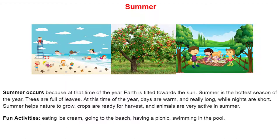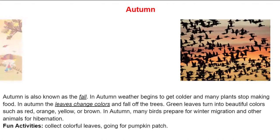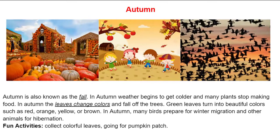Autumn is also known as the fall. In fall, weather begins to get colder and many plants stop making food. The leaves change colors and fall off the trees — green leaves turn into beautiful colors such as red, orange, yellow, or brown. Many birds migrate and other animals prepare for hibernation.